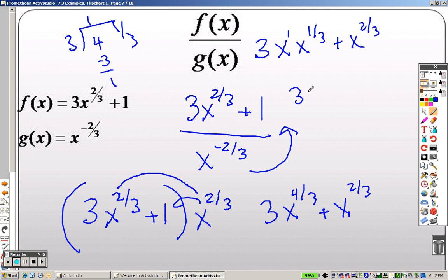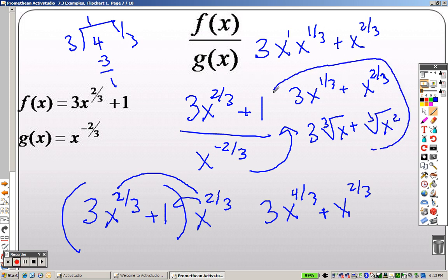So I get 3x to the 1 third plus x to the 2 thirds. If I wanted to, I could rewrite this with roots, but it's really not going to make much of a difference. Either or would be acceptable. This is just to make sure you understand how to plug them all in.